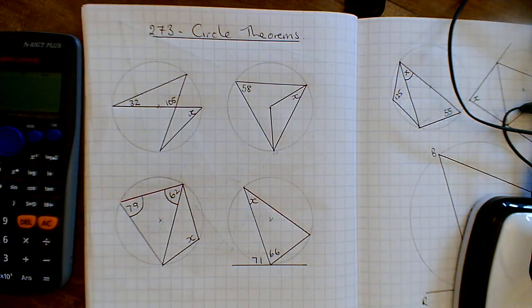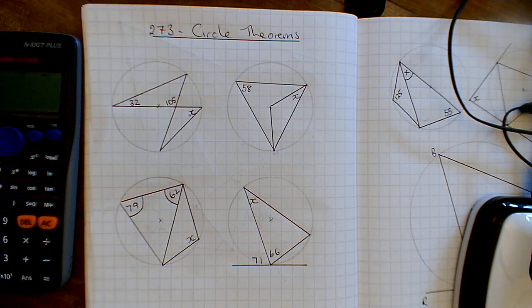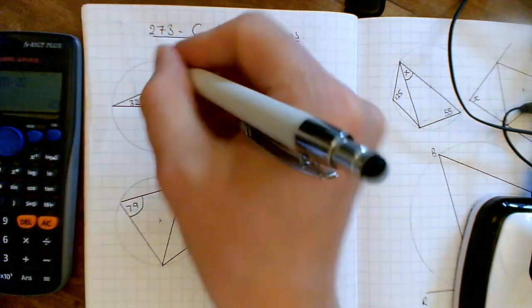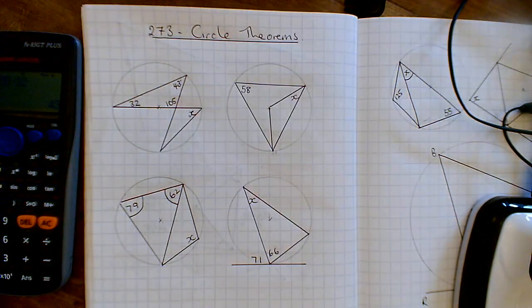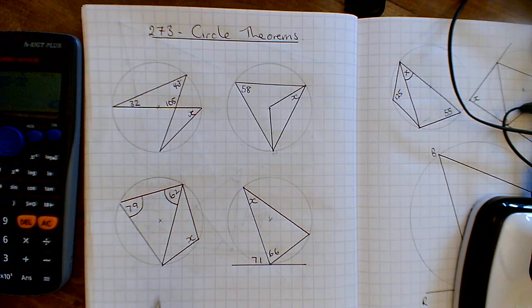angles in a triangle add to 180. So if I take my calculator and I just figure out 180, and I take off that 105, and I take off the 32, I get 43 up here. So I've got 43 degrees in the top corner. This happens a lot when you're working on angle problems. You have to work on lots of different angles to get the one that you want.